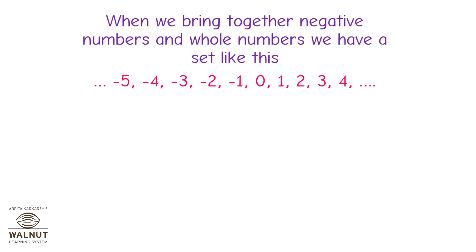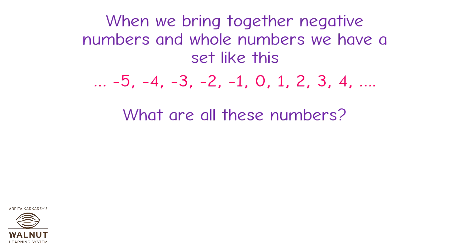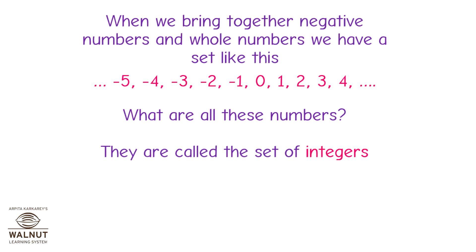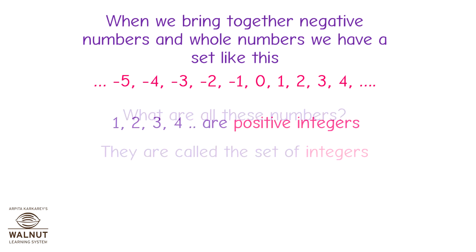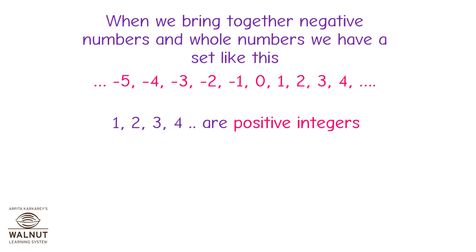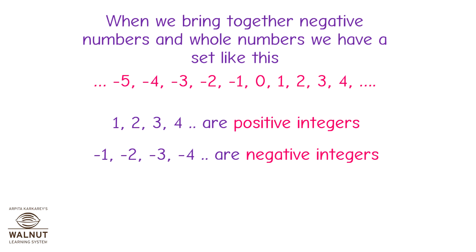When we bring together negative numbers and whole numbers, we have a set like this: minus 5, minus 4, minus 3, minus 2, minus 1, 0, 1, 2, 3, 4, etc. 1, 2, 3, 4, etc. are positive integers. Minus 1, minus 2, minus 3, minus 4, etc. are all negative integers.